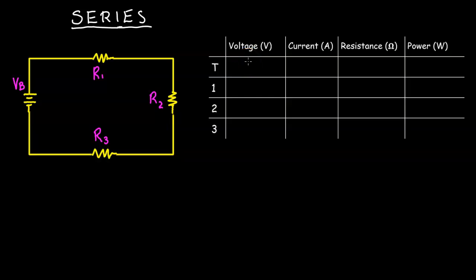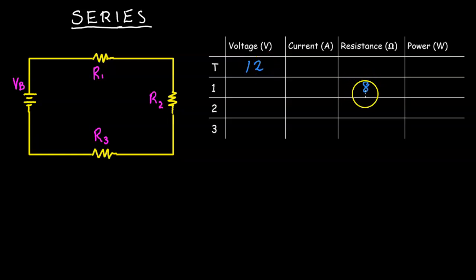In this video we're going to analyze a series and parallel circuit. We're going to start off with a series circuit — a circuit with only one path. The battery has a voltage of 12 volts. Resistor 1 has a resistance of 8 ohms, Resistor 2 has a resistance of 3 ohms, and Resistor 3 has a resistance of 1 ohm.